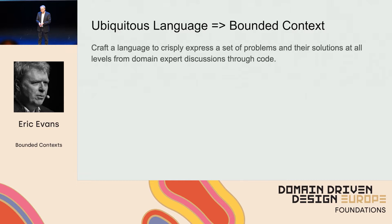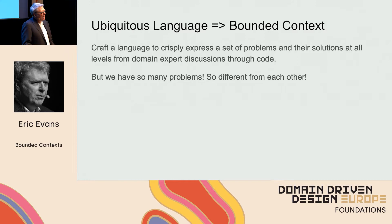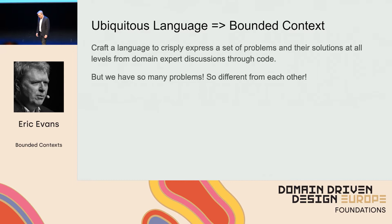If we're going to develop a language, we have to deal with all the issues that language has, like ambiguity of meaning. But another issue is that we have a lot of problems, and they're quite different from each other. One of my regrets about the word 'ubiquitous' is that it means everywhere, and it makes people think we're looking for a single model that would address all our problems throughout the system. But that's definitely not what we want to do.